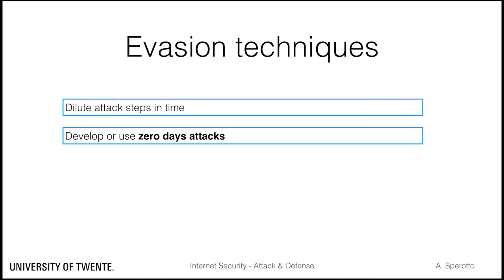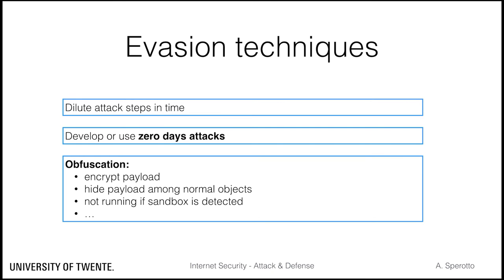APTs rely on so-called zero-day attacks, namely new attacks that have not been observed before. Most security software will be unprepared to deal with a zero-day. APTs also make use of obfuscation and anti-detection techniques, like encrypting the payload, hiding malicious code among normal-looking objects, or even refusing to run if a detection system, like a sandbox, is detected.